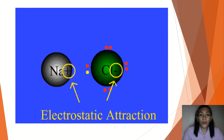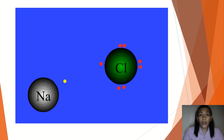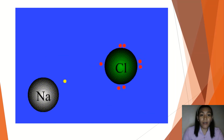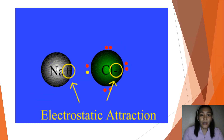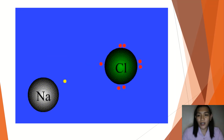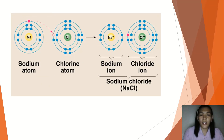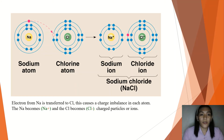For ionic bonds, you can see the transfer of an electron from sodium to chlorine, and there is electrostatic attraction between these two ions. Originally they don't have charges, but once there is attraction, the sodium becomes positively charged and the chlorine becomes negatively charged. This is the free electron of sodium being transferred to chlorine. From an atom, it now becomes an ion.